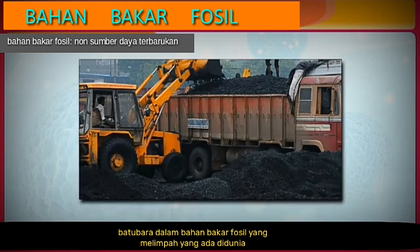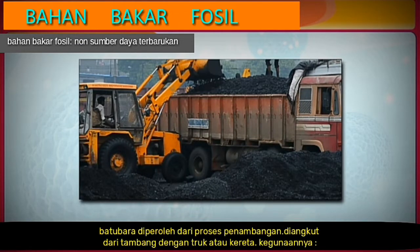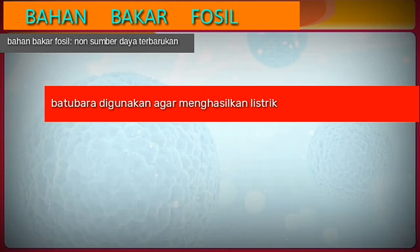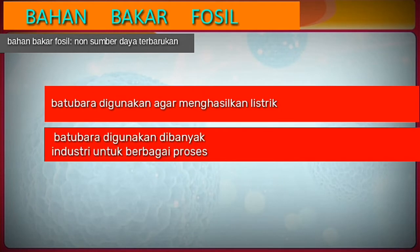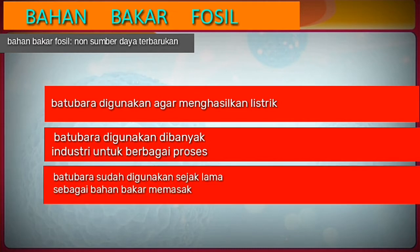Coal is the most abundant fossil fuel present in the world. We obtain coal by a process known as mining, and it is transported from coal mines in trucks or trains. Some uses of coal are: it is used to produce electricity, it is used in many industries for various processes, and it has been used since ages as a cooking fuel.